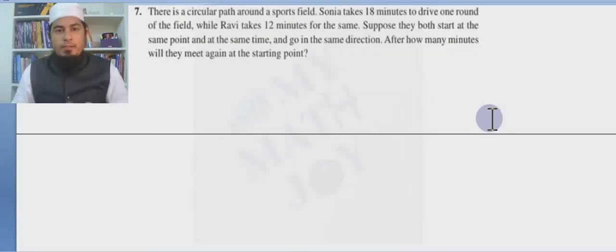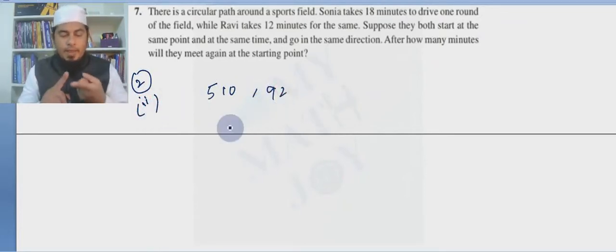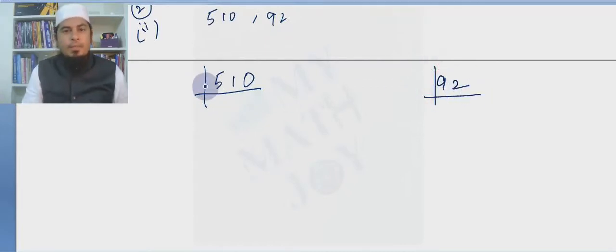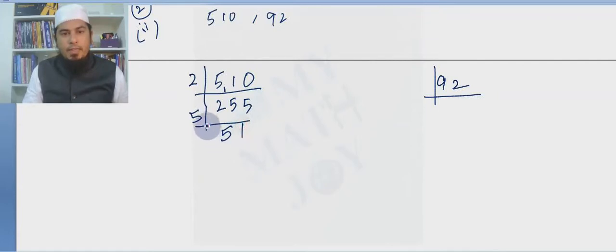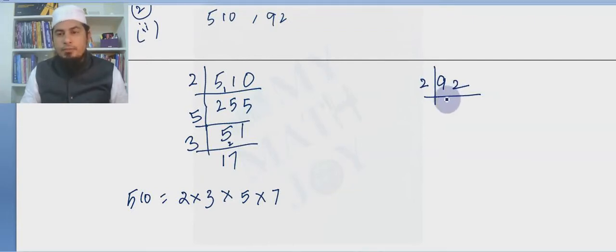We are working with 510 and 92. For 510, arranging in increasing order: 2 times 3 times 3 times 5 times 17. Note that 17 is a prime number, which is why we stop there. Now for 92, using prime factorization with 2: 2, 4, 8 — we get 92 equals 2 squared times 23.